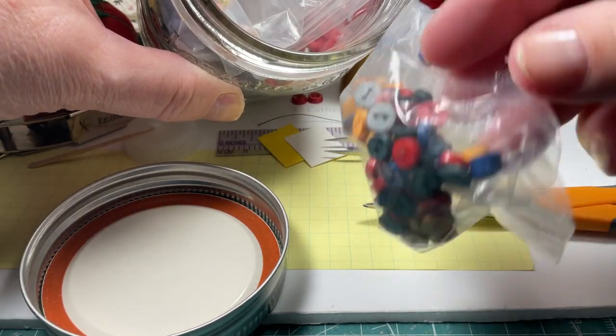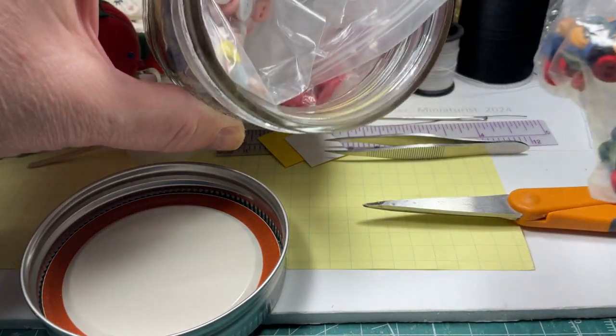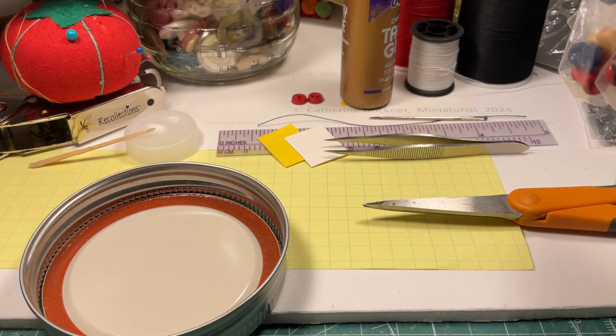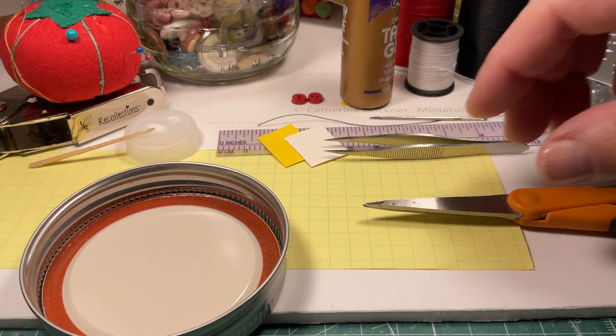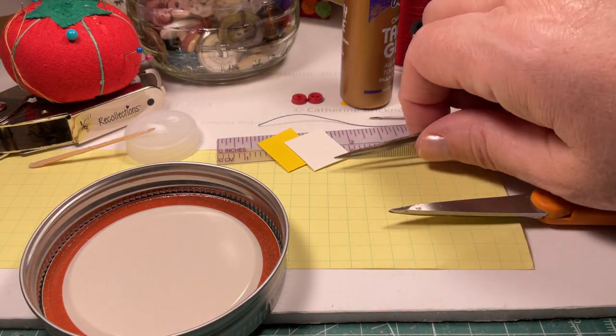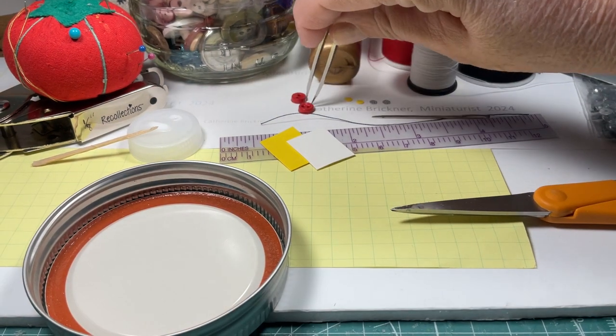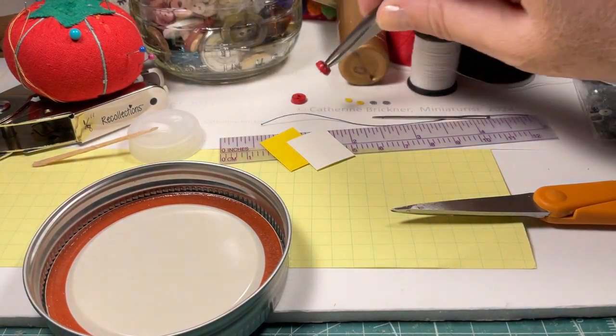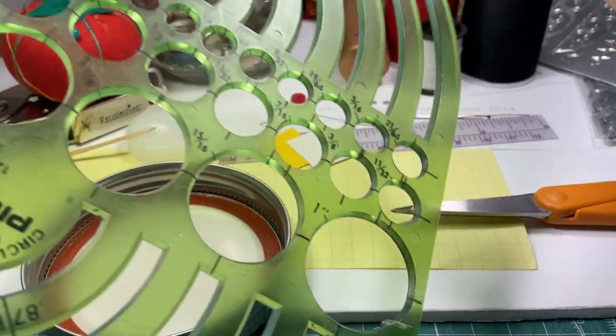Select two quarter inch diameter by one sixteenth or so flat buttons from your button jar, tin, bin, or purchase from a store or online. You can check the size of the buttons with a ruler or a template.